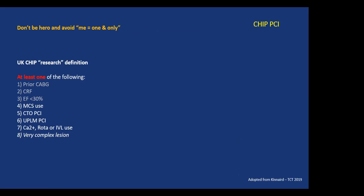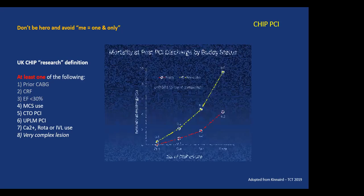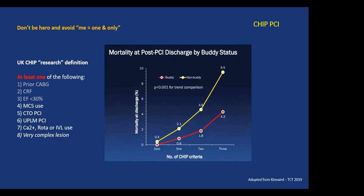Last but not least is don't be a hero — don't claim that it's you and you only that can do this. Based on the UK CHIP research definition of the CHIP procedure, which has six components — and I added another two — they found that with a single operator doing the procedure, mortality steadily increases, essentially doubling with every single factor added.